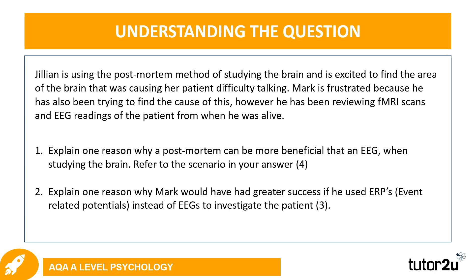Starting with the first question: Gillian is using the post-mortem method of studying the brain and is excited to find the area of the brain that was causing her patient difficulty talking. Mark is frustrated because he has also been trying to find the cause of this; however, he has been reviewing fMRI scans and EEG readings of the patient from when he was alive. You have two questions to have a go at. The first is to explain one reason why a post-mortem can be more beneficial than an EEG when studying the brain, and make sure that you refer to the scenario in your answer.